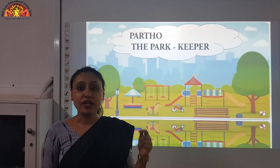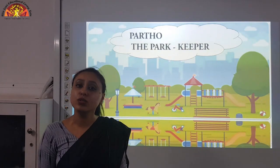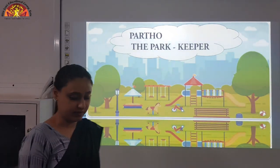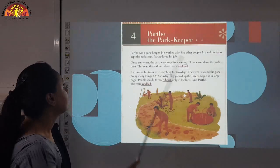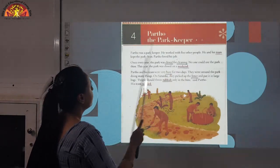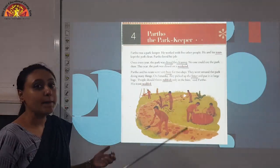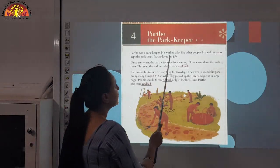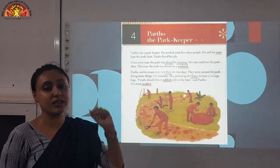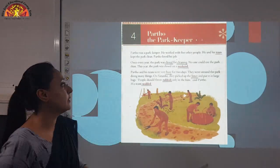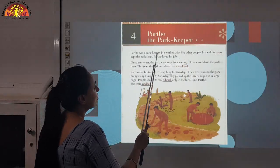Before starting, point your index finger where I am reading and keep your pencils along with you to mark the hard words. Chapter 4, Partho the Park Keeper. Partho was a park keeper. He worked with 5 other people. So with how many people did he work? He worked with 5 people. He and his team kept the park clean.